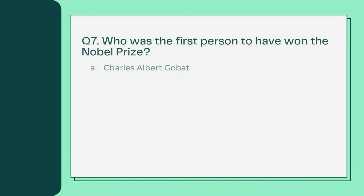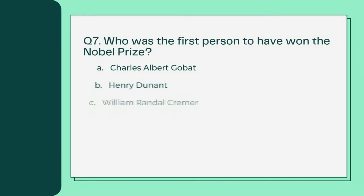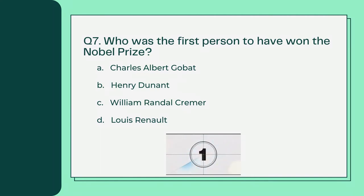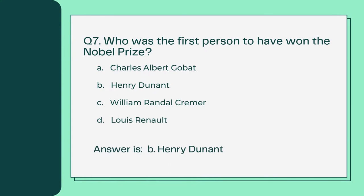Who was the first person to have won the Nobel Prize? A. Charles Albert Gobat B. Henry Dunant C. William Randall Kramer D. Louis Renault. Answer is B. Henry Dunant.